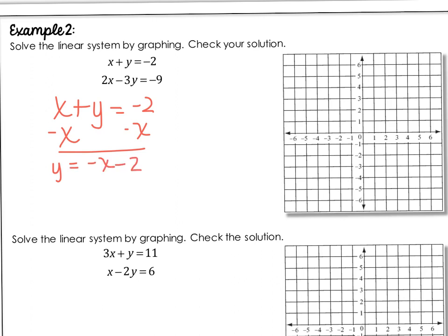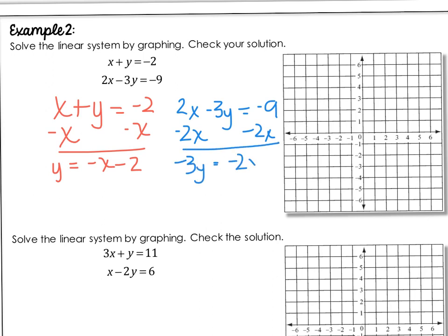My second equation is 2X minus 3Y equals negative 9. I need to move the X term to the other side — subtract 2X — so I have negative 3Y equals negative 2X minus 9. Divide by negative 3 for each term: a negative over a negative gives positive, and I get Y equals 2/3 X plus 3.